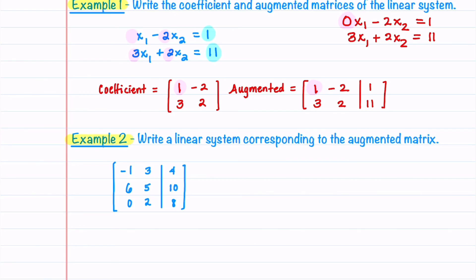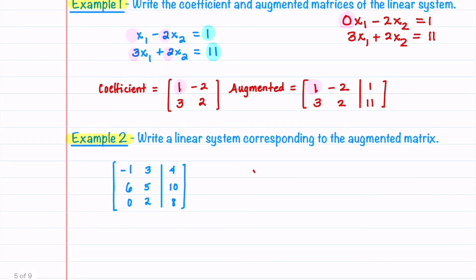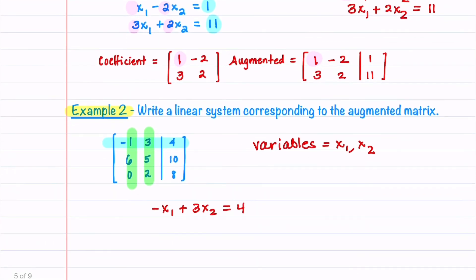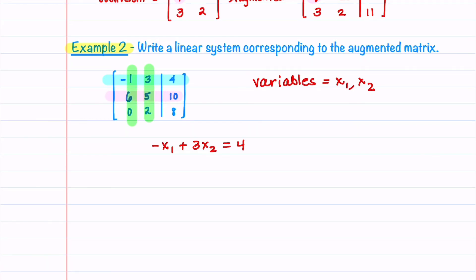In our second example, we do the reverse: given an augmented matrix, we write the corresponding linear system. With two columns on the left we have two variables, x1 and x2. The first row gives us −x1 plus 3x2 equals 4, the second row gives 6x1 plus 5x2 equals 10, and the last row gives 2x2 equals 8 — there is no x1 term because we have a 0 in that position.